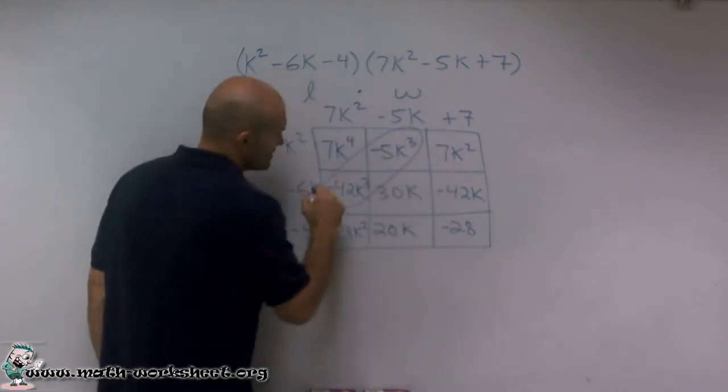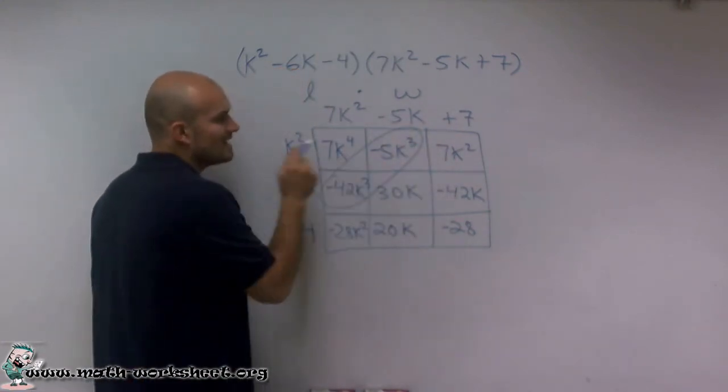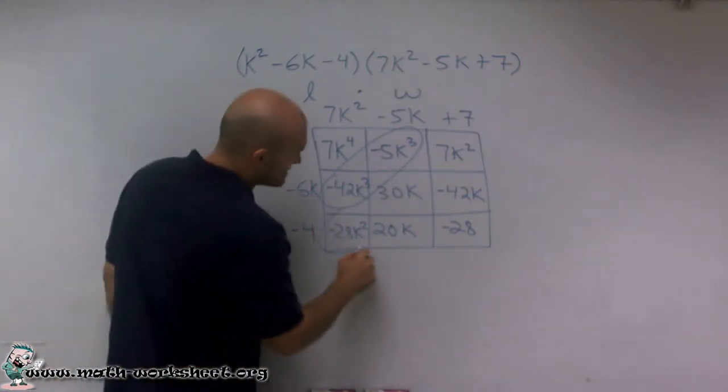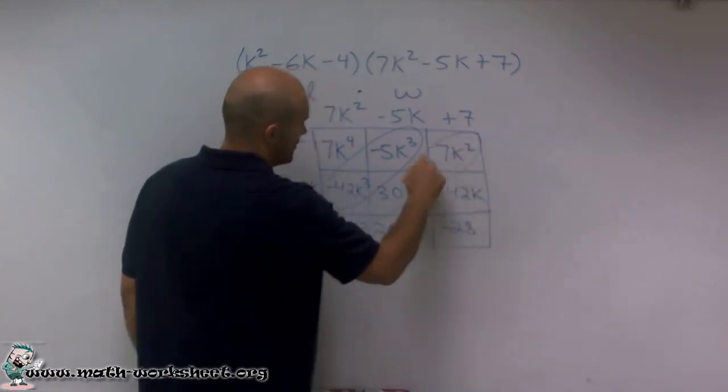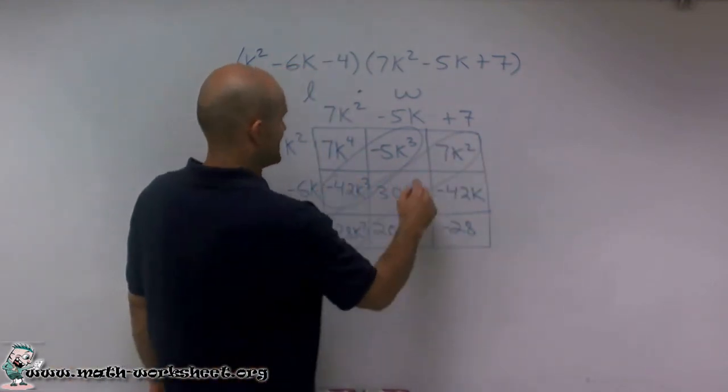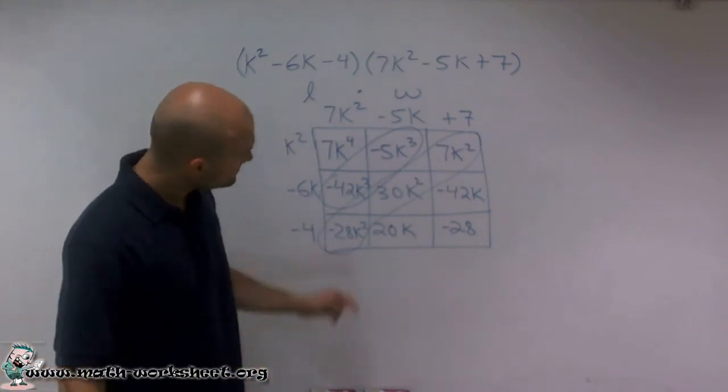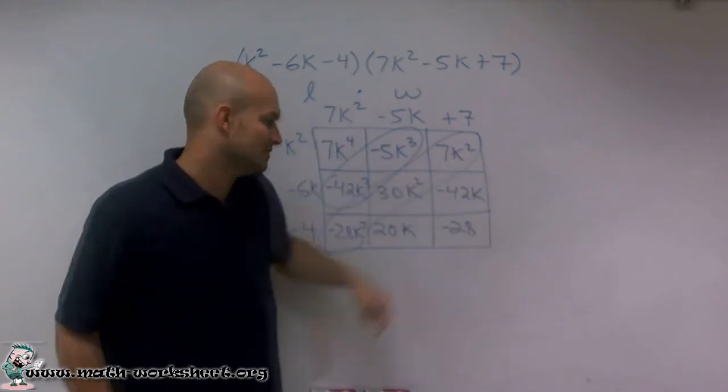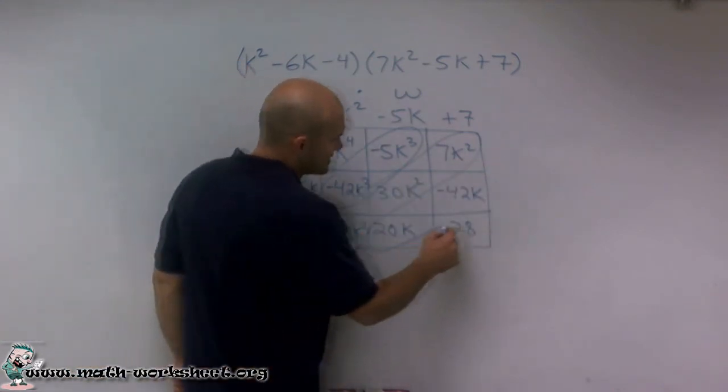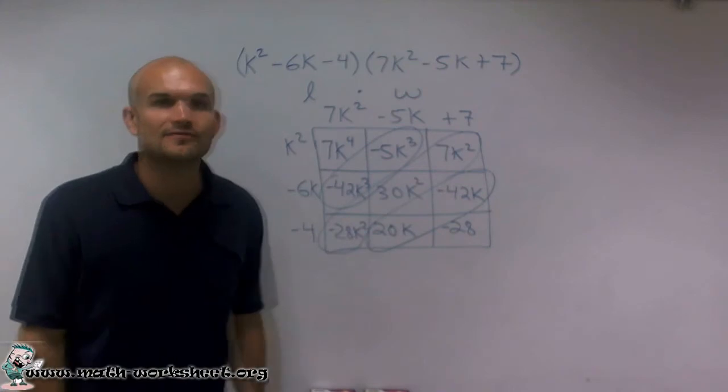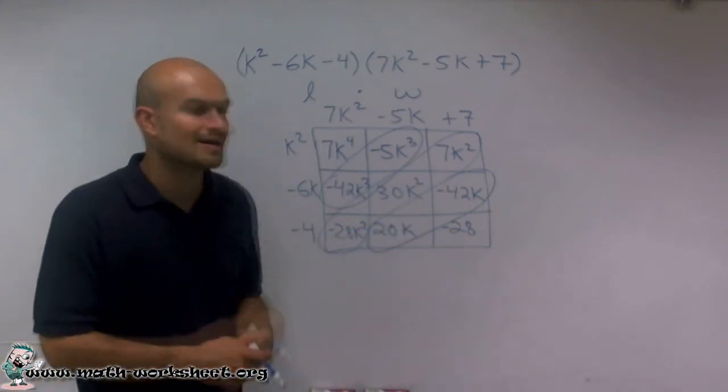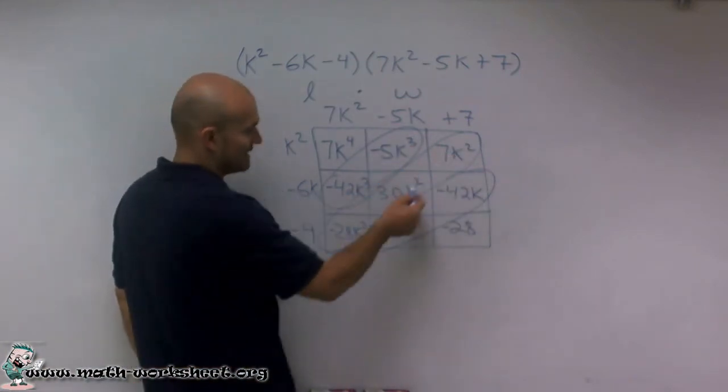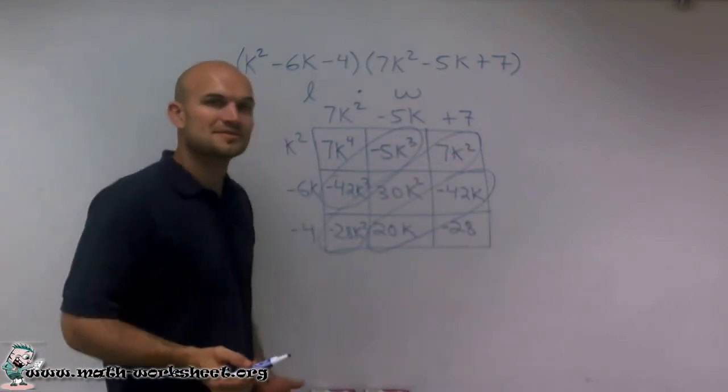The cool thing I noticed about this is I noticed some patterns. These two boxes are similar. They both have k cubed in them, meaning they're like terms, meaning that I can combine them. These three boxes also have something in common. That's k squared. Therefore, these all have k squared, meaning I can combine all of these. And then these two boxes also have something in common, where they're both k to the first power, meaning I can combine them. So rather than writing out everything and then combining these terms, I noticed that I can just combine these diagonals.